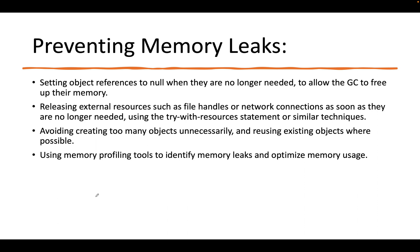How can we prevent memory leaks? The first thing is to set object references to null. We created a reference of 'new A' and set it to null — the moment you do that, GC is free to release whatever memory it was allocating to that object. Secondly, release external resources when they're not needed using the try-with-resources statement. This is very important. This technique ensures that whenever external resources are used and you forget to close them, try-with-resources handles it automatically — you don't have to manually remember to close it.